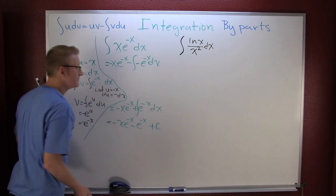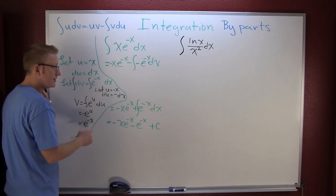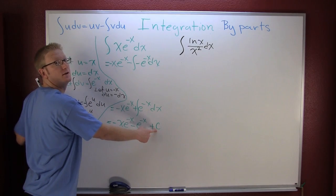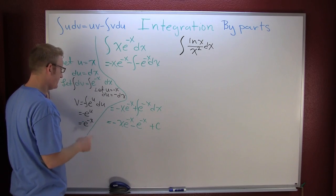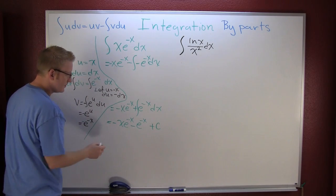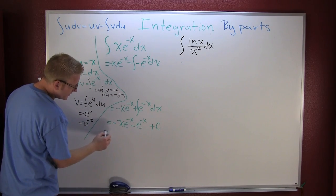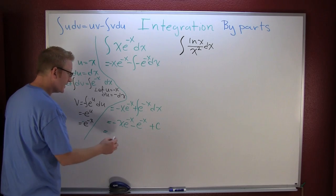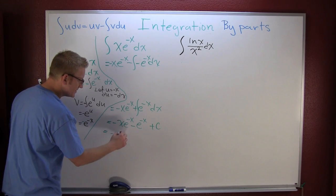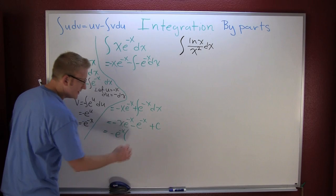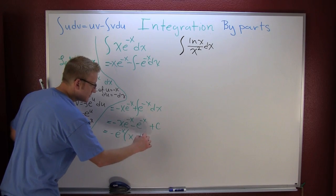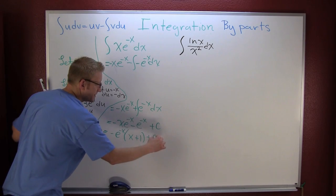We could have had the c here, but it's a constant, a constant plus a constant is a constant. I could clean up the algebra here, and I think I will. I'm going to pull out a minus e to the minus x, and then left over on the inside I have an x plus one plus that c.